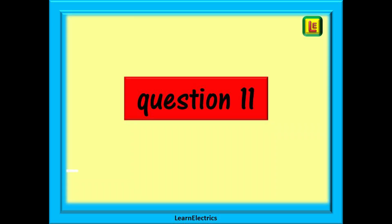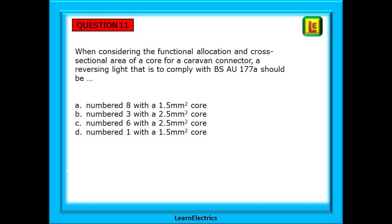Question 11: when considering the functional allocation and cross-sectional area of a core for a caravan connector, a reversing light that is to comply with BS AU 177A should be what? You have four choices. Pause again while you find the table and the answer.